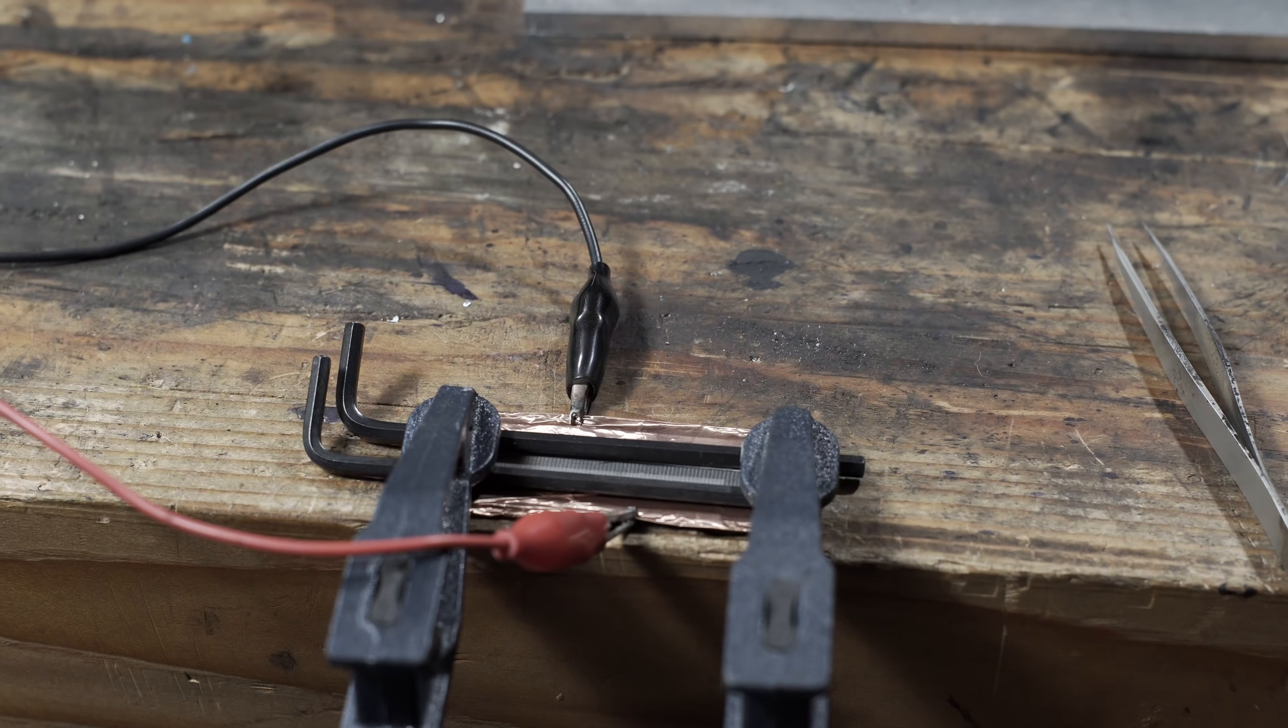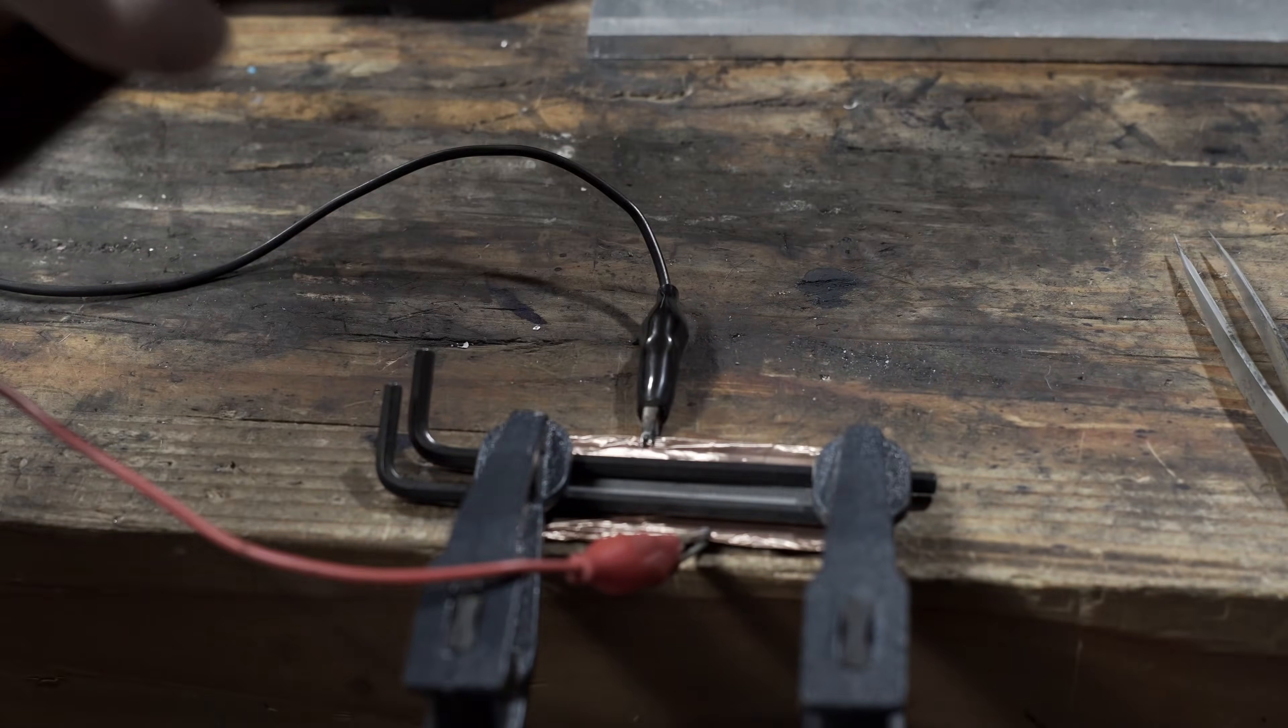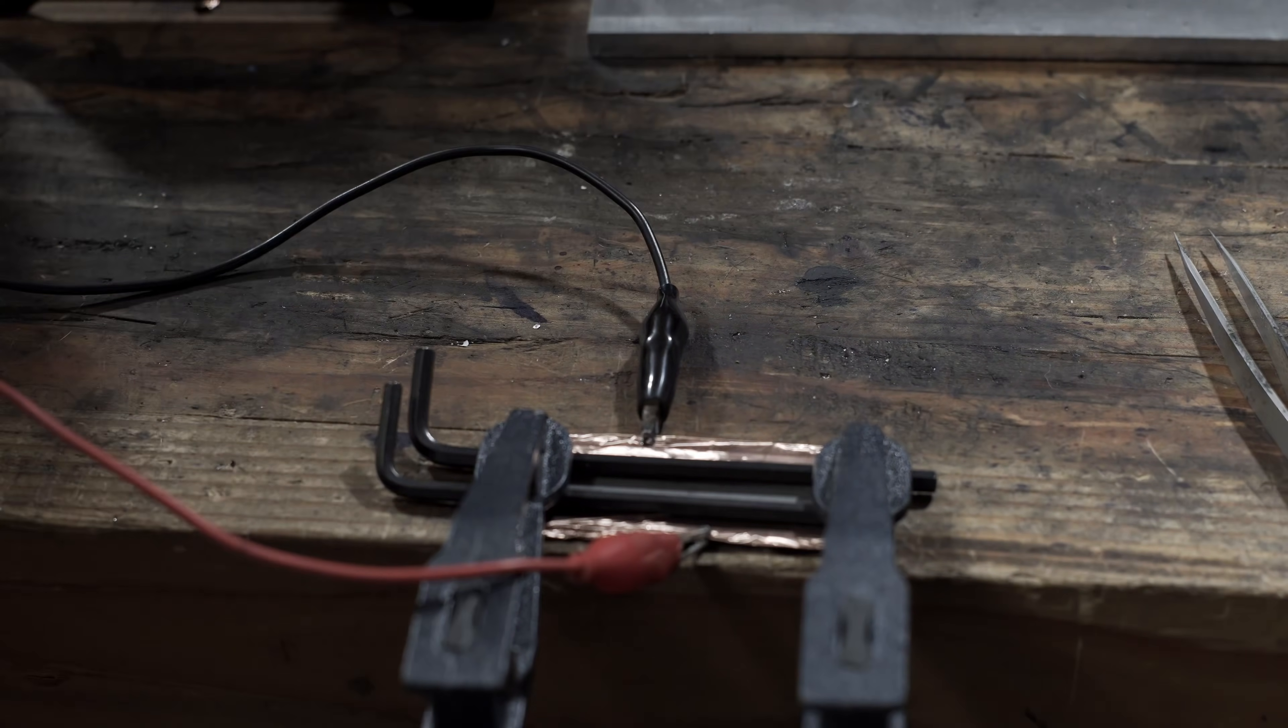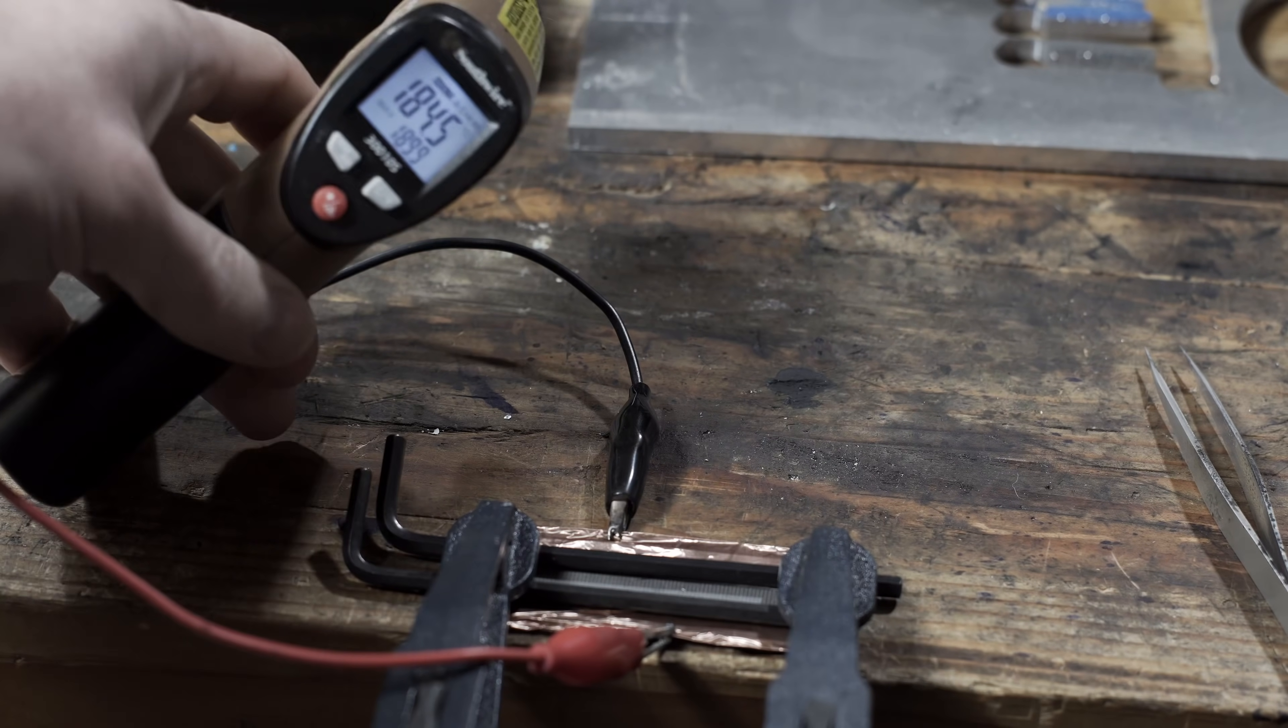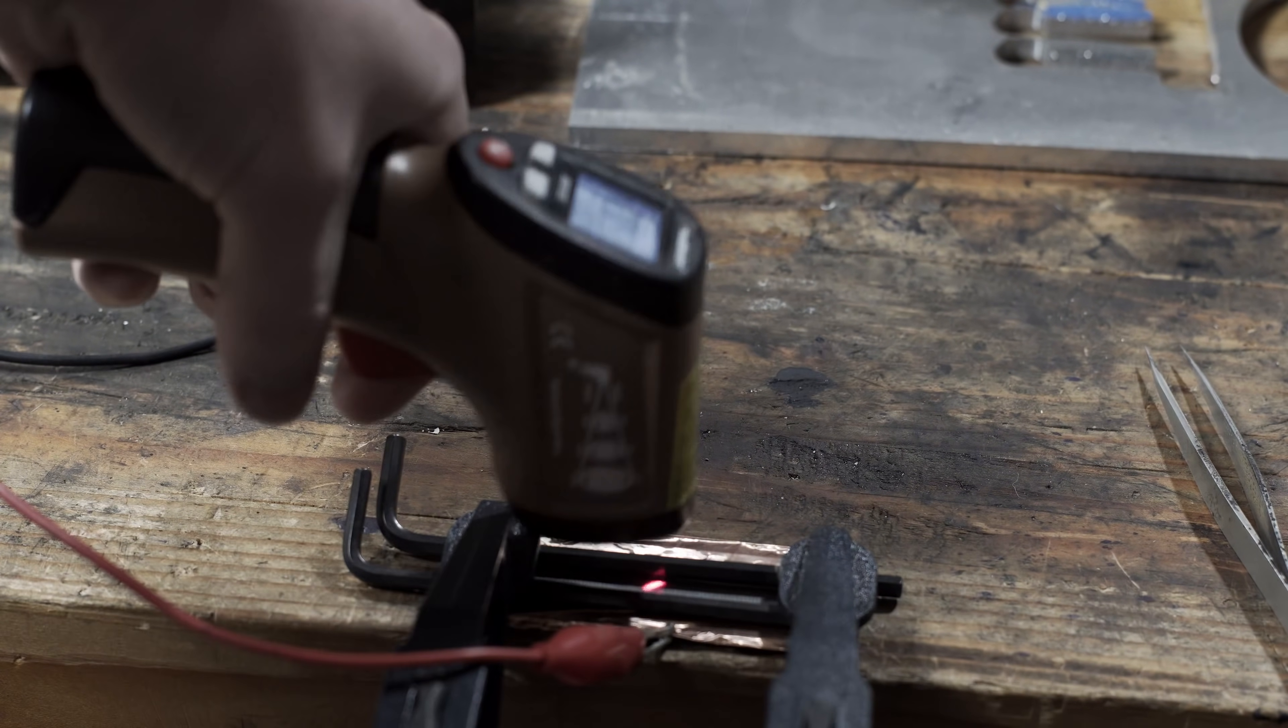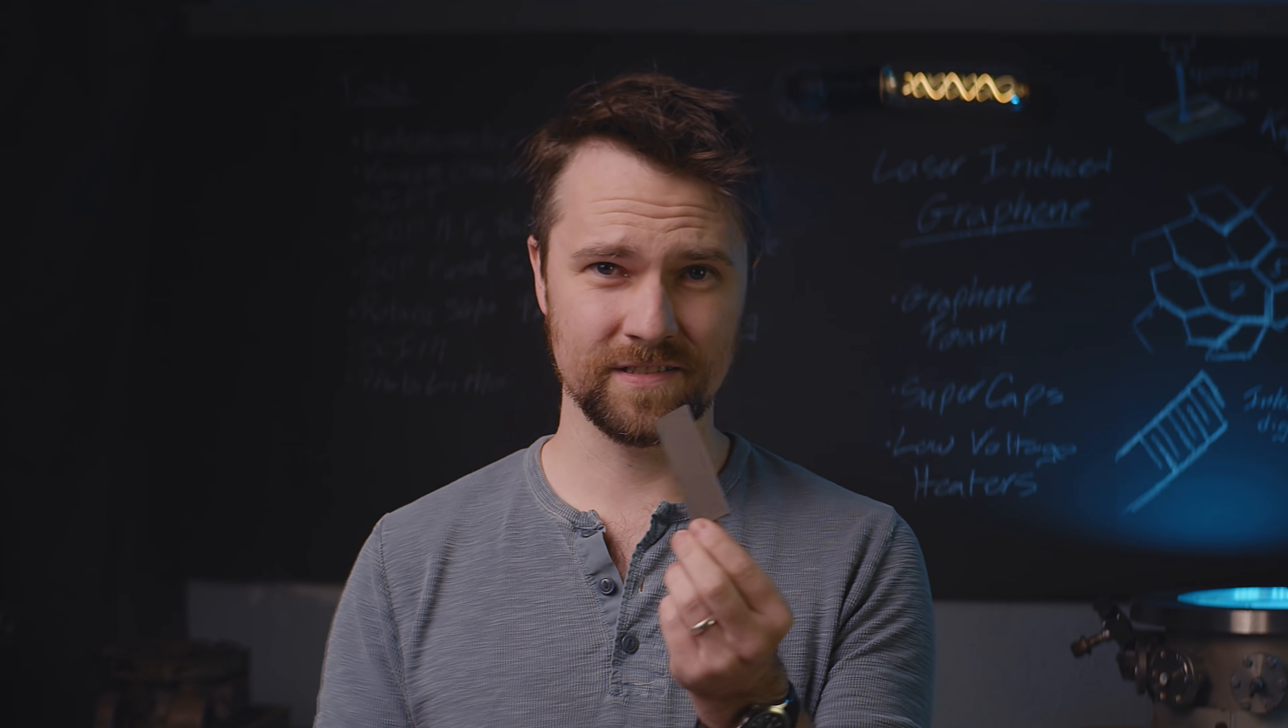And you get a really high-temperature heater. These things can get up to 200, 300, 400 degrees Celsius. Really the limiting factor is, at some point, the underlying Kapton or the adhesive on the Kapton starts to decompose, and then your heater falls apart. So there is a limit to how hot they can get, but it's a really simple process that you can scale up, essentially, as much as you want, and get heaters that can very quickly reach pretty impressive temperatures.